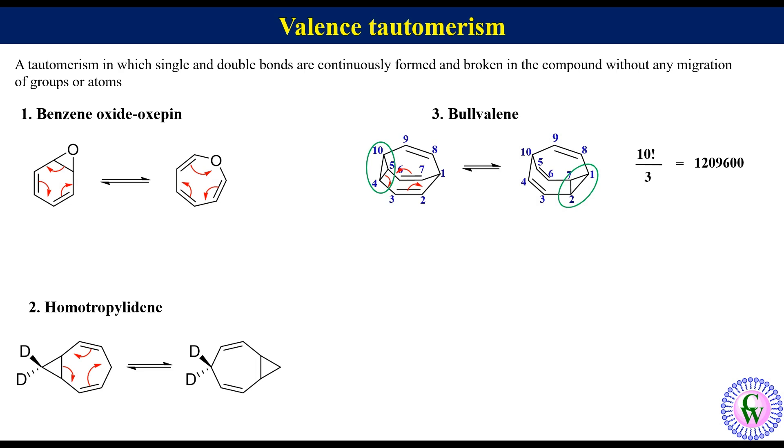Proton NMR of bullvalene at 10 degrees Celsius shows only one signal at 4.22 ppm, suggesting a fluxional nature of the molecule.